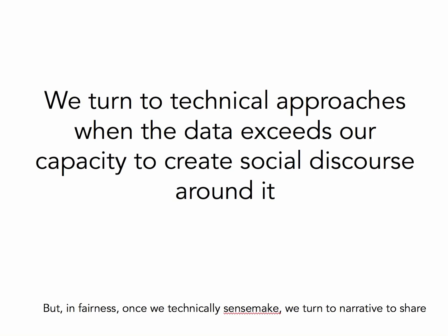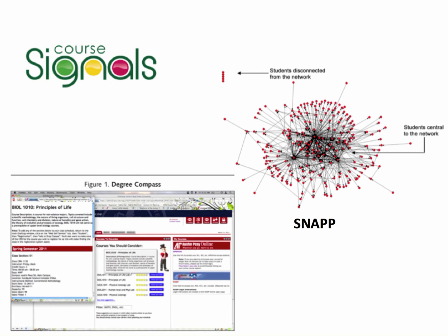Once we have those models or visualizations, we turn back to social discourse to share with others and make sense of it. Some of the toolsets you may have heard of include tools like CourseSig, which is a predictive modeling software that helps identify students at risk of dropping out; Degree Compass, recently purchased by Desire2Learn, which allows individuals to move through courses based on what might be the best next course for their success; and Social Networks Adapting Pedagogical Practice, a browser plugin developed by Shane Doss that creates social networks. The value of these tools is that we can quickly communicate what something means within a particular space.